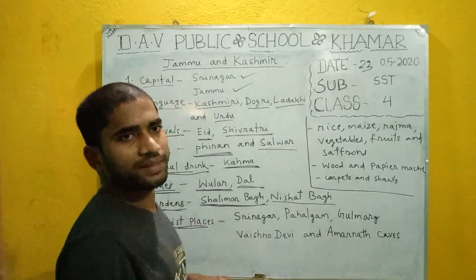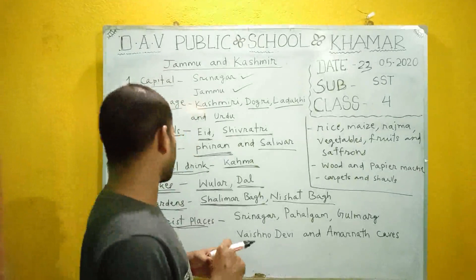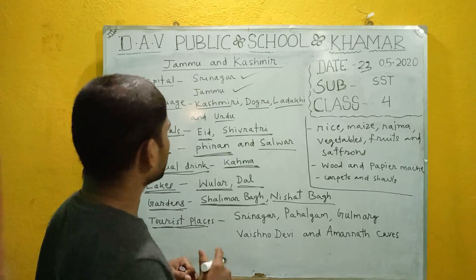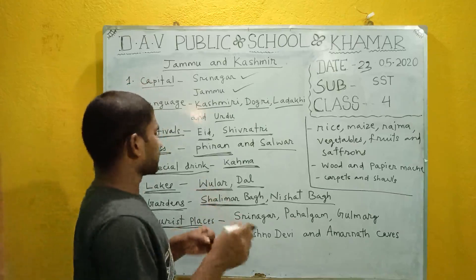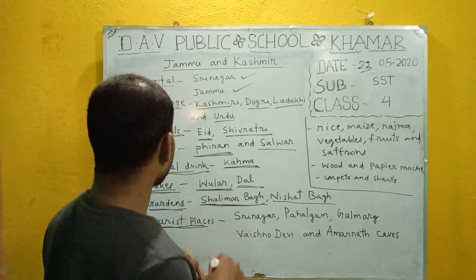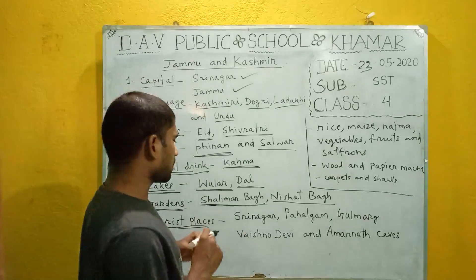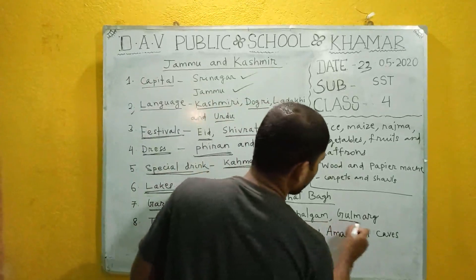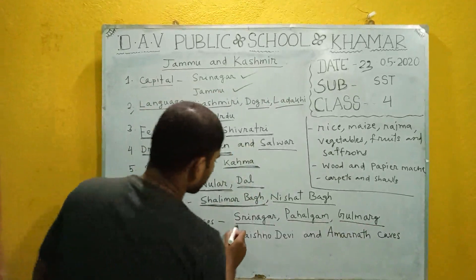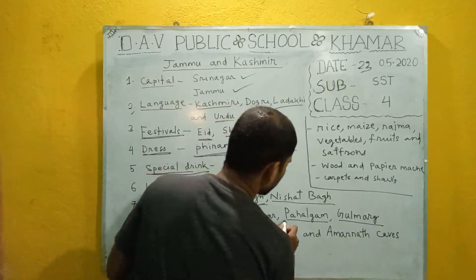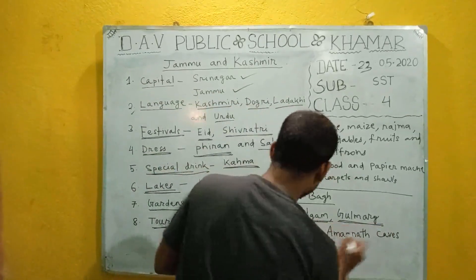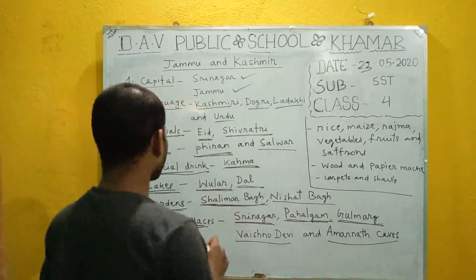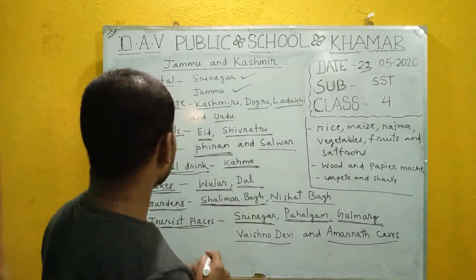There are different tourist places in Jammu and Kashmir that attract tourists to come and enjoy the beauty of the state. The tourist places are Srinagar, Pahalgam, Gulmarg, Vaishno Devi, and Amarnath Caves.